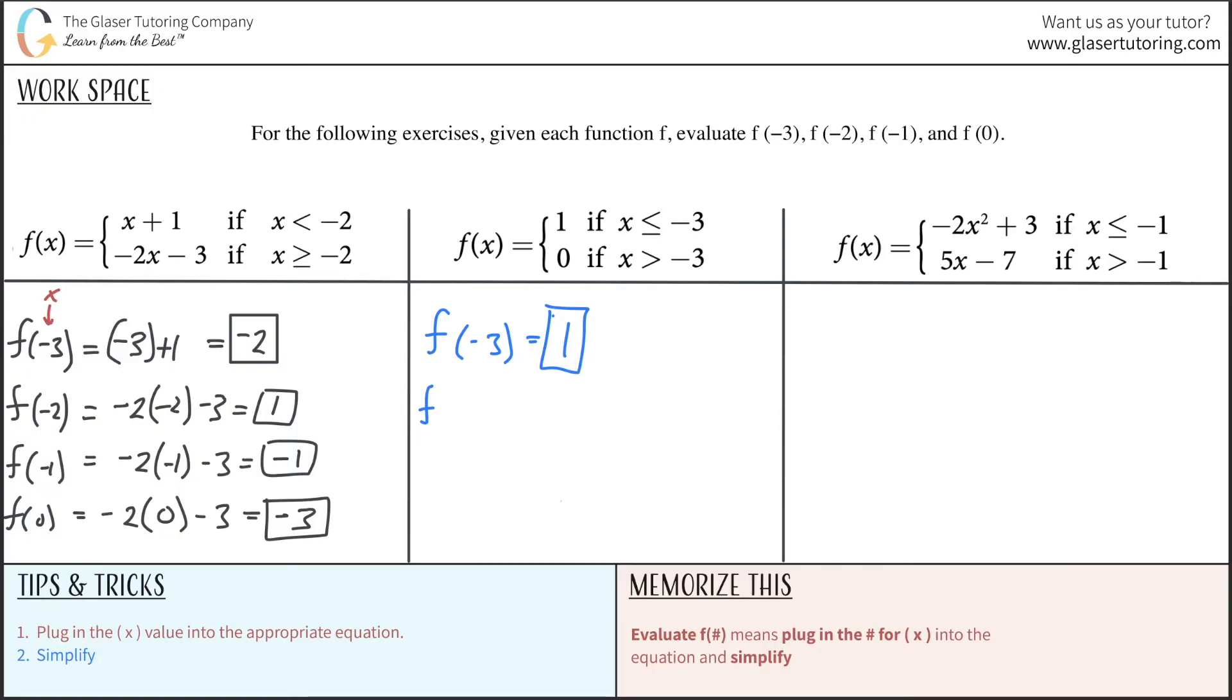So f now of negative 2. Which value will I be using this time? Well, negative 2 is greater than negative 3. So I'm going to be using now the second value. So that's just 0. How about then f of negative 1? Again, same thing. It's greater than negative 3. So that's just 0. And I think you can see the pattern here. This is just 0. Great. Easy.